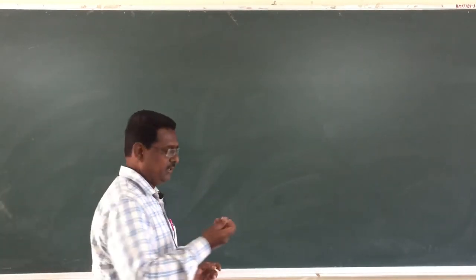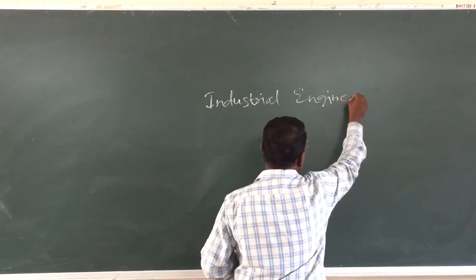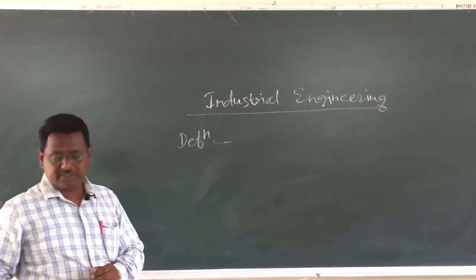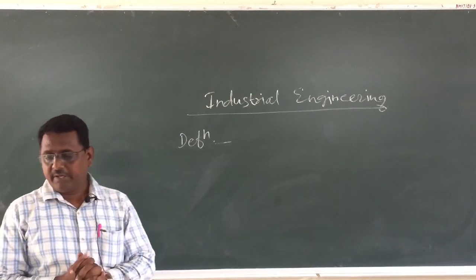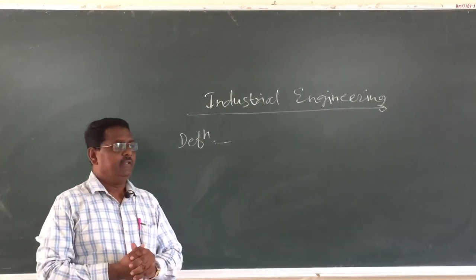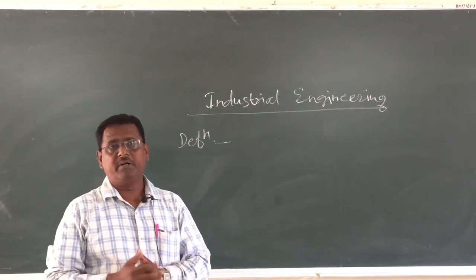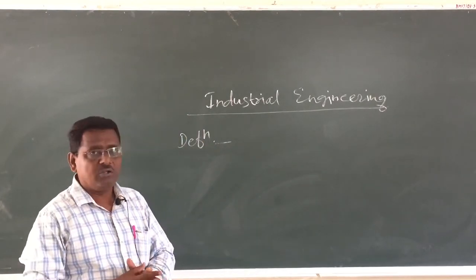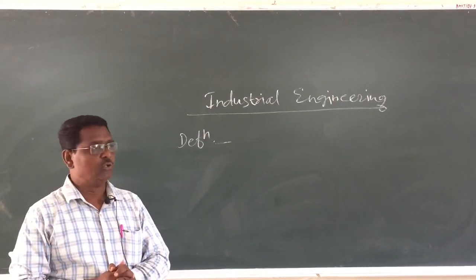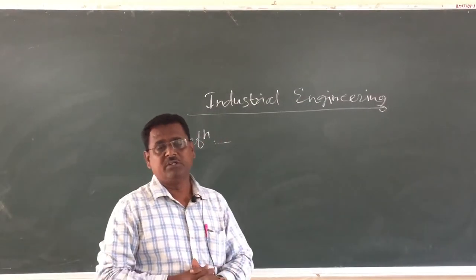Today we will start Industrial Engineering. Industrial Engineering is concerned with the design, improvement, and installation of integrated systems of man, materials, and machines. You are going to study how to develop the design of the product — product development — as well as the integration of all resources: man, machine, material, market, and money. Using all these resources, you improve the productivity of the organization while reducing the cost of the product.